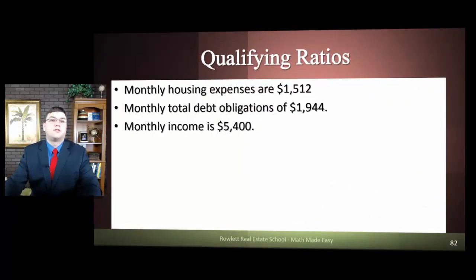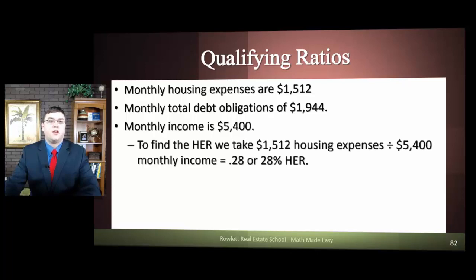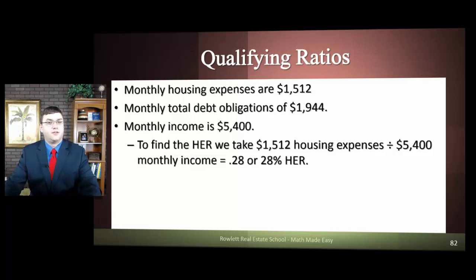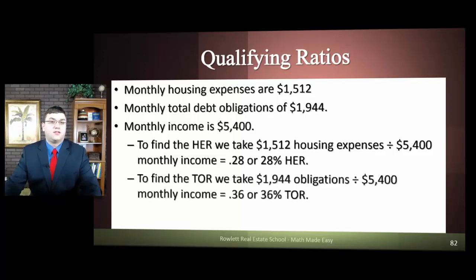There are two numbers that we use, one for each. The monthly housing expenses were stated to be $1,512. To find the Housing Expense Ratio (HER), we just take that $1,512 and divide it by $5,400 as the income. That tells us our housing expense ratio is 28%.